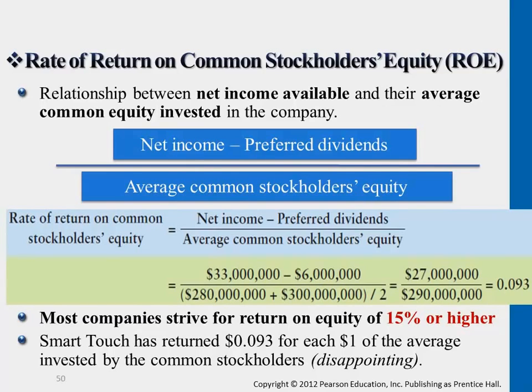Not each and every company has preferred shares — some companies do, some companies don't. So in order to be comparable on ROE, oftentimes we just exclude the preferred dividends part. We also do not consider preferred shares in this ratio. This ratio is purely about common stockholders' equity.